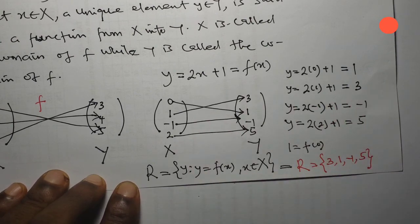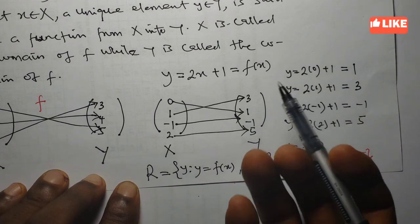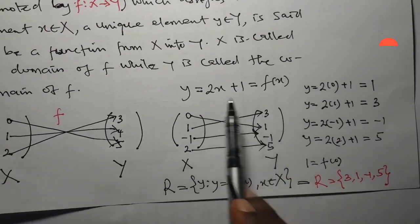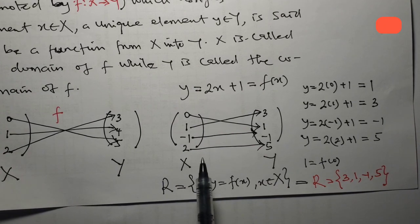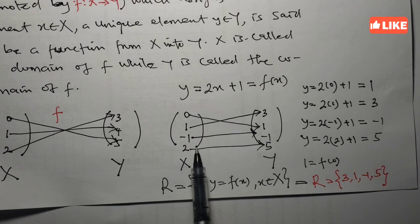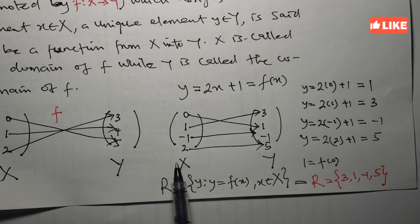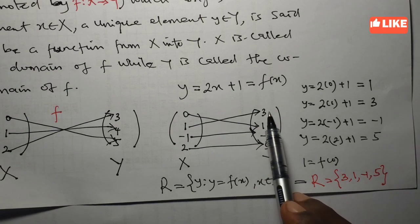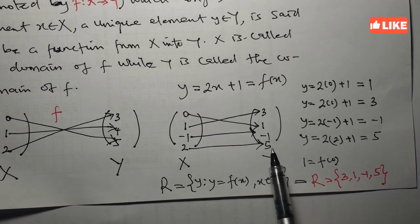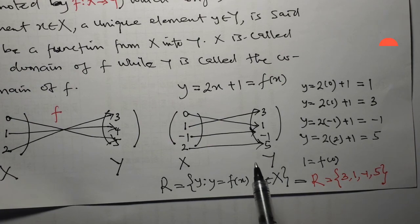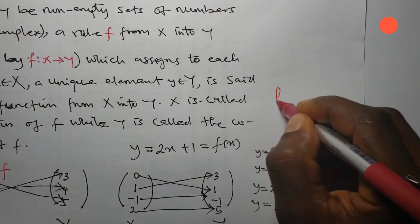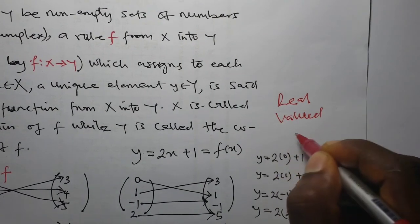So what do we observe from all this? We observe that a function is just like a machine where you plug in values and get values out. Also, since the values in the domain — 0, 1, -1, and 2 — are all real numbers, and the values in the range — 3, 1, -1, and 5 — are also all real numbers, we shall call this function a real-valued function. A real-valued function is a function whose co-domain is a set of real numbers.